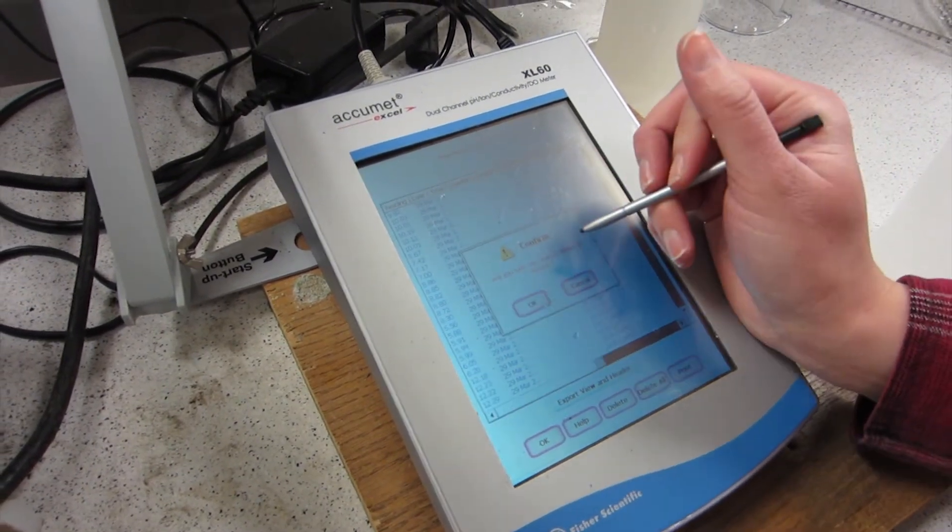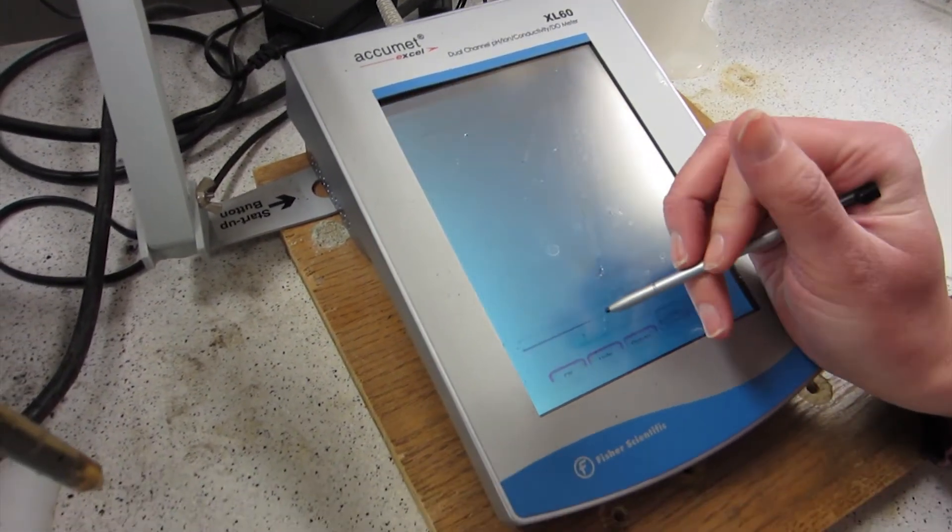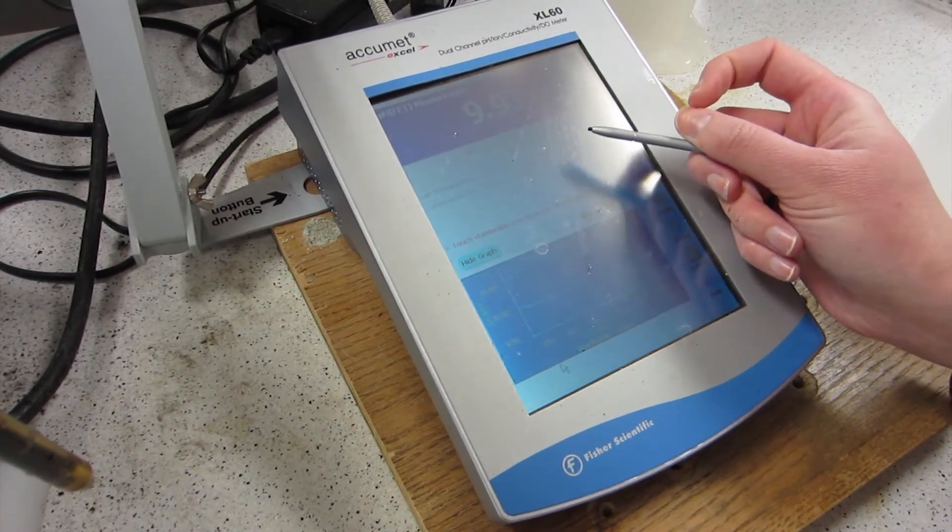So you go to delete all, OK, and then hit OK twice to return to that other screen. And now it's recording again.